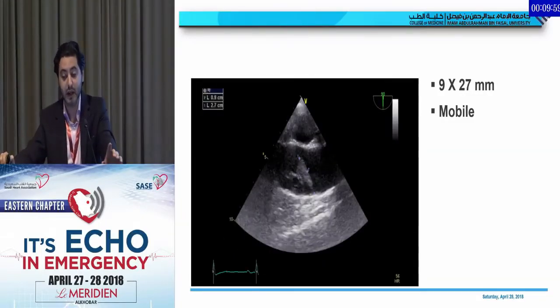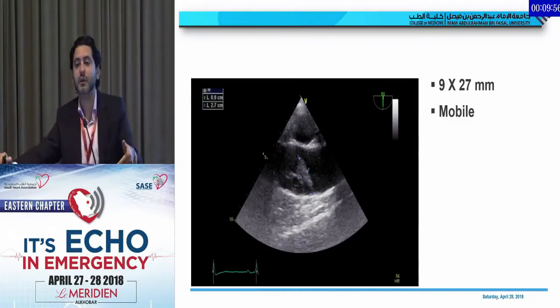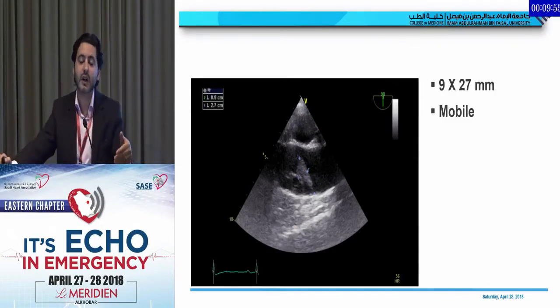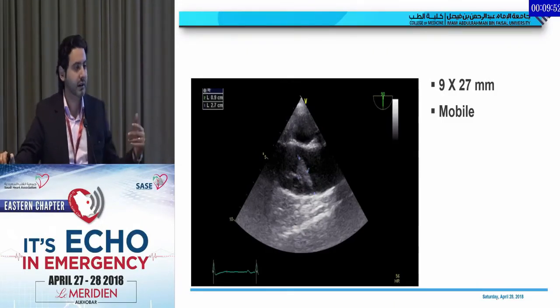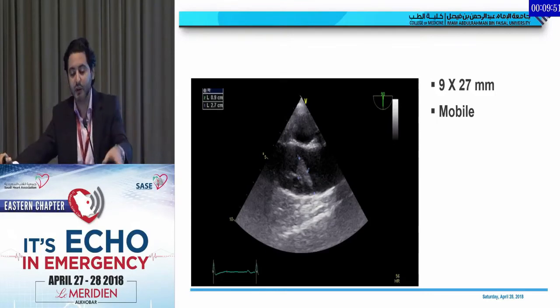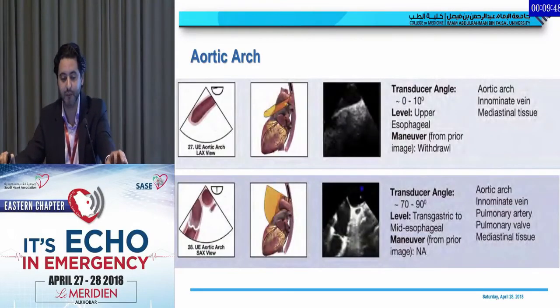So when we do echo for cardiac source of embolism — after finishing PFO and all of that — we have to look at the aorta very carefully.